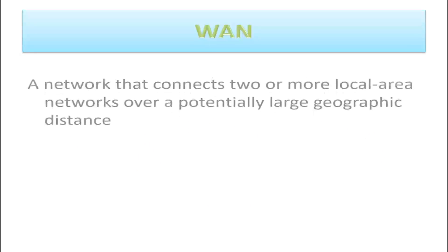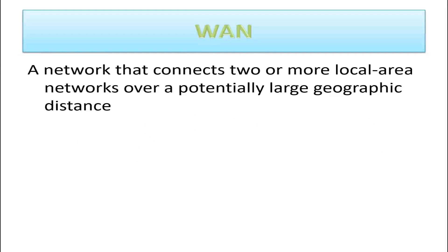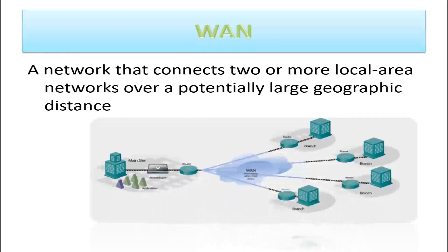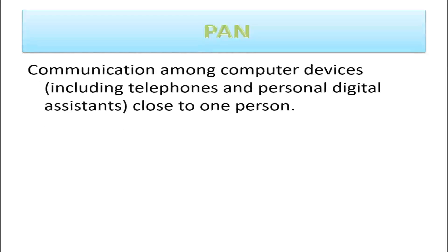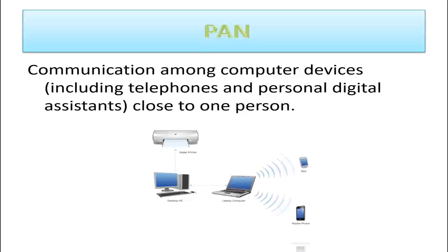Wide area network is a network that connects two or more local area networks over a potentially large geographic area. It covers a broad area, for example, across metropolitan, regional, or national boundaries. Personal area network, on the other hand, is a computer network used for communication among computer devices, which includes telephones and personal digital assistants, close to one person.